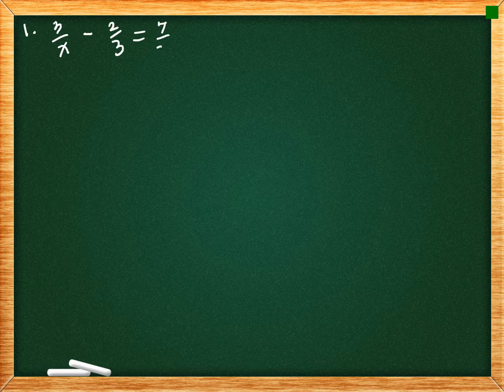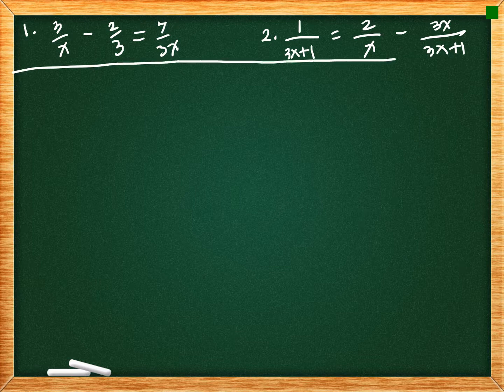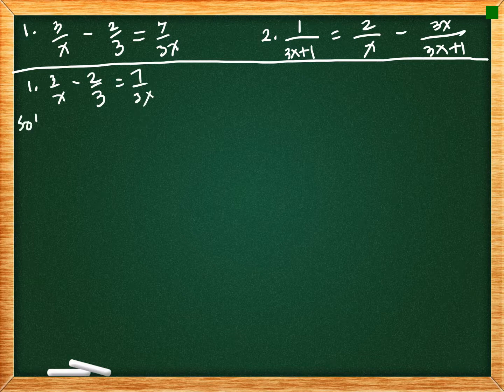I am going to give you two examples of rational equations and we will solve them together. Item number one is 3 over x minus 2 thirds equal to 7 over 3x. Item number two is 1 over 3x plus 1 equal to 2 over x minus 3x over 3x plus 1. Let's have item number one and place the solution here.